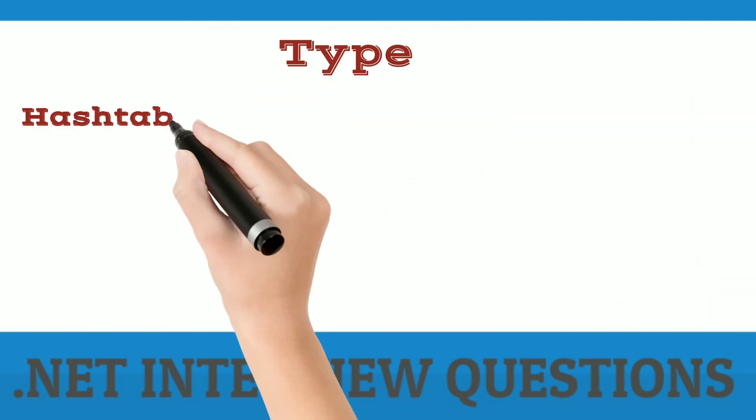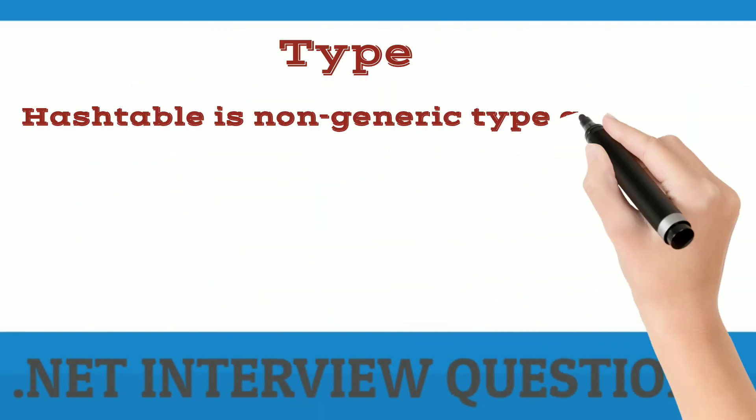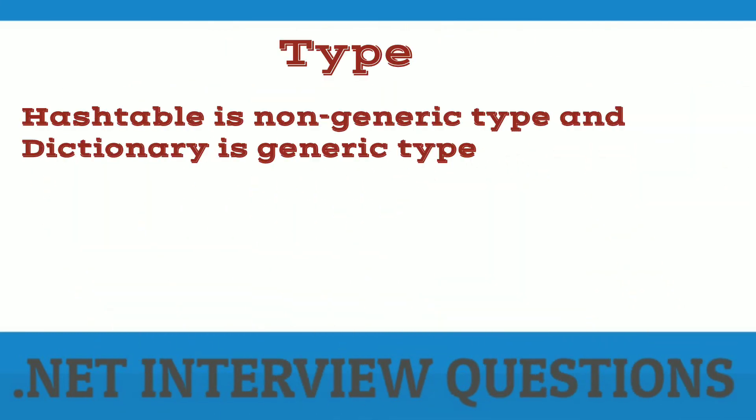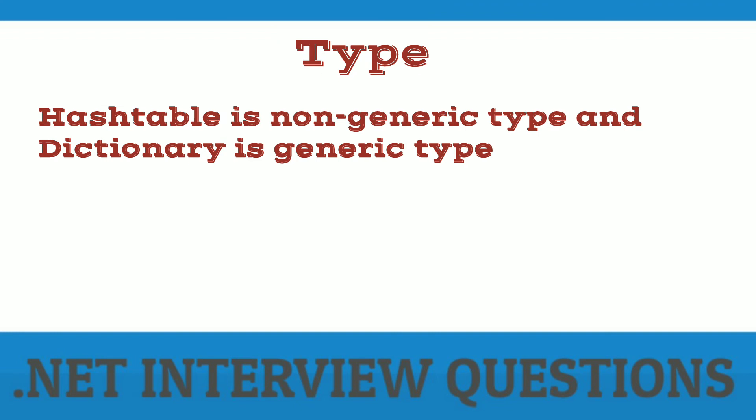Hash table is a non-generic type and dictionary is a generic type. This means that hash table can store key-value pairs of any data types, but dictionary can store key-value pairs of specific data types only.